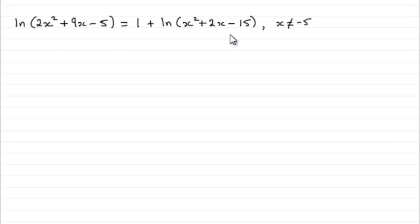So to bring a log equation down to two terms, bring the logs to one side. I'm going to subtract this term here from both sides. So therefore, what I'm going to have is the natural log of 2x² + 9x - 5 minus this term here, the natural log of x² + 2x - 15. And that's going to leave me with 1 = 1.